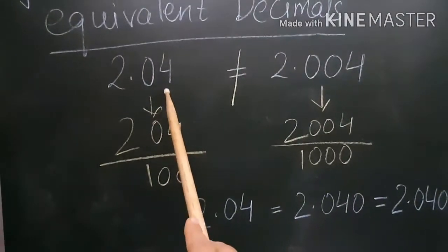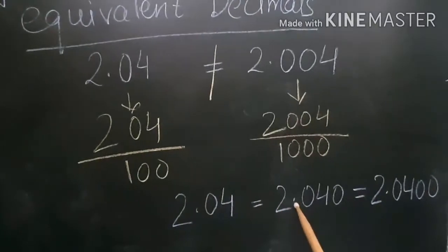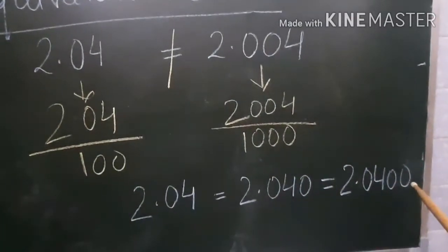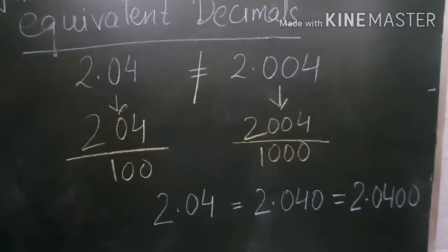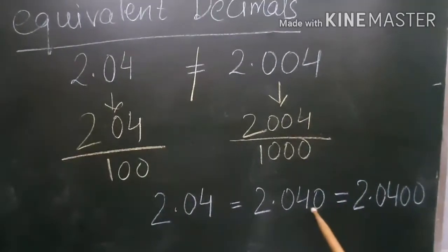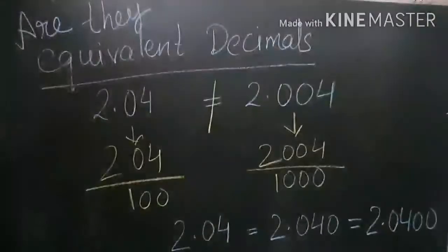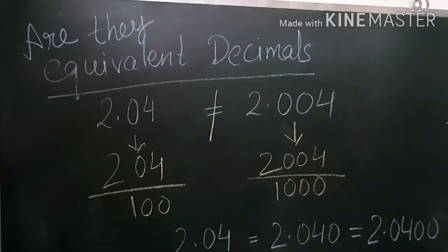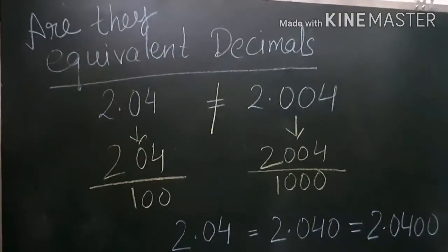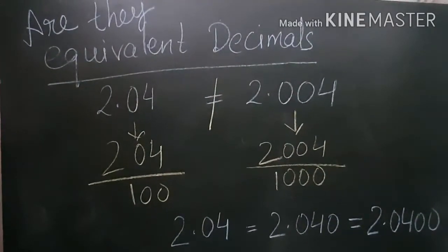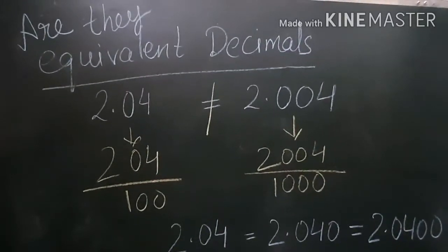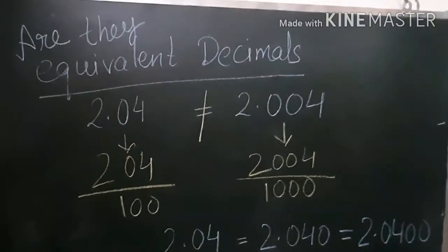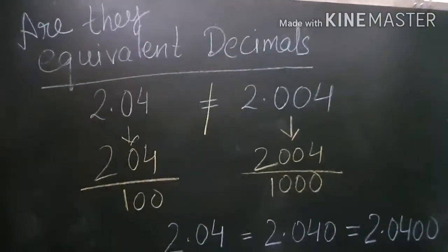So to make equivalent decimals, add zeros only at the end — at the last place. For example, 2.04 is equivalent to 2.040, which is equivalent to 2.0400, and so on. In today's lesson we learned about decimals, converting fractions to decimals, equivalent decimals, and expanded form. I hope this is clear. Don't forget to like, comment, and share. Keep watching My Way Learning — thank you!